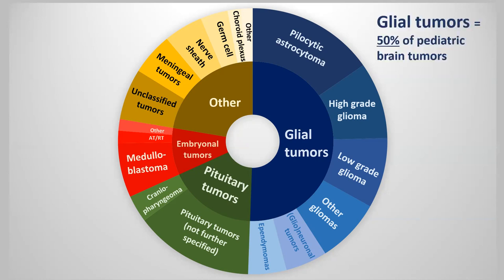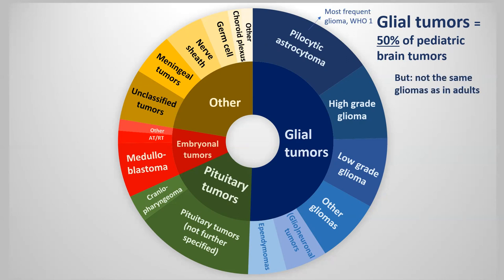The most frequent kind of tumors in children are the glial tumors — tumors derived from glial cells — constituting about 50% of pediatric brain tumors. However, the kind of glial tumors in children is not comparable to adults. In adults, the most frequent glial tumor is glioblastoma, which is rare in children. Astrocytomas and oligodendrogliomas characterized by an IDH mutation, and in the case of oligodendrogliomas a 1p19q codeletion, are also very infrequent in children. The spectrum of glial tumors in children is totally different.